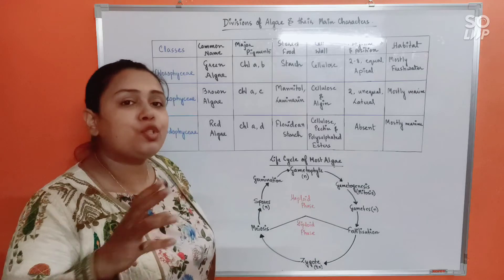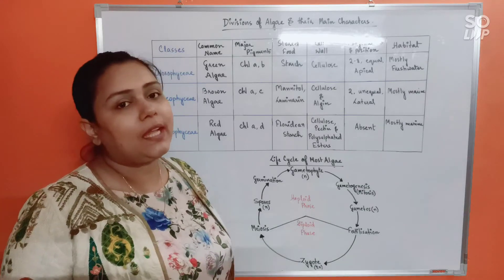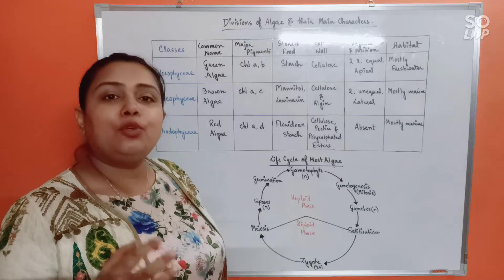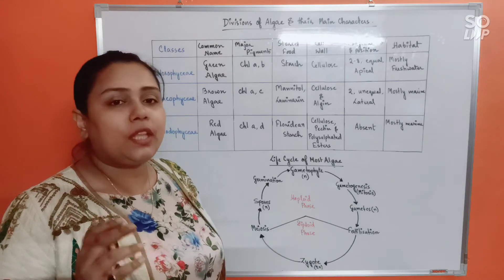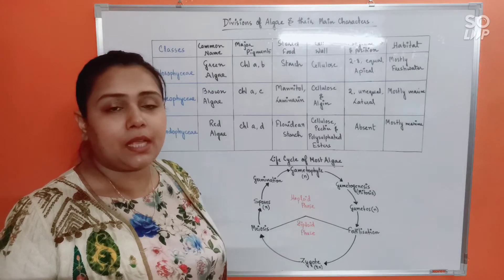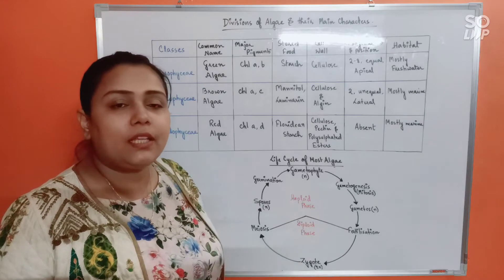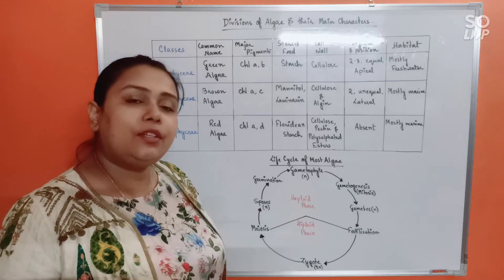Mostly the algae will be haploid. And you know very well that plants show alternation of generation, so they have haploid and diploid phases in their life cycle. In the haploid phase, the plant body is called gametophytic plant body or gametophyte. On the other hand, in the diploid phase, the plant body is called sporophytic plant body or sporophyte.